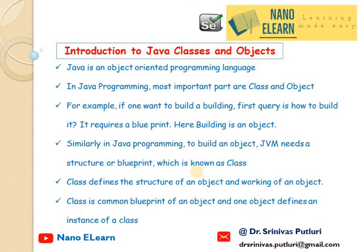Introduction to Java classes and objects. We all know Java is an object-oriented programming language and everything in Java will be related to Java classes and objects. Hence, in Java programming, the most important parts are the class and the object.